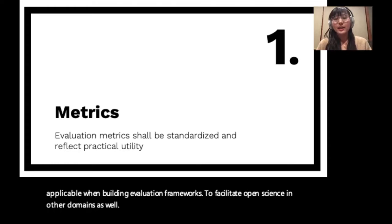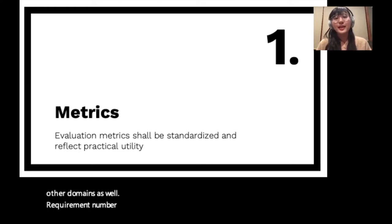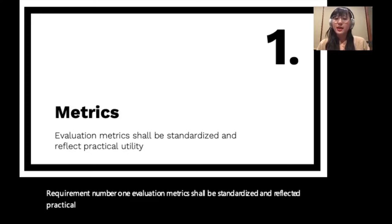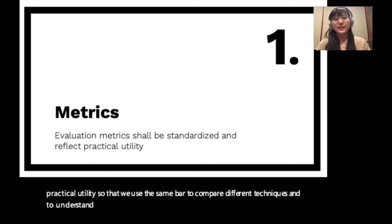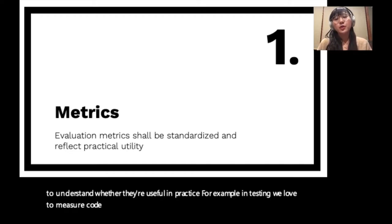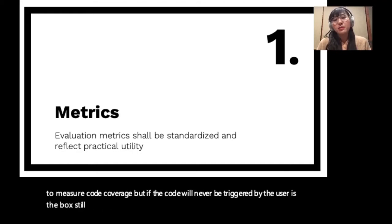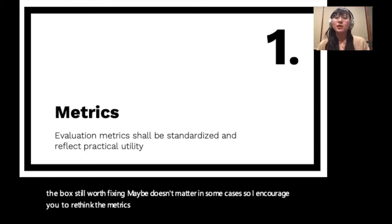Requirement number one: evaluation metrics shall be standardized and reflect practical utility, so that we use the same bar to compare different techniques and understand whether they're useful in practice. For example, in testing we measure code coverage, but if the code will never be triggered by the user, is the bug still worth fixing? Maybe it doesn't matter in some cases. I encourage you to rethink the metrics you use with practical utility in mind. Maybe you'll invent some new metrics.